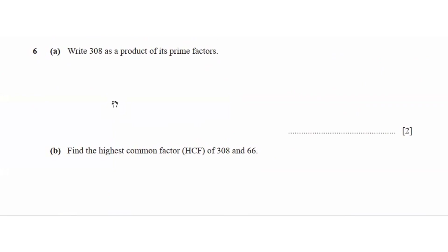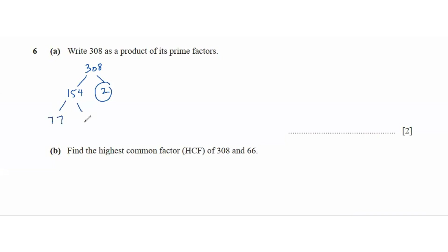Question 6 says write 308 as a product of its prime factors. 308 is divisible by 2 because it's an even number, so 154 times 2. 2 is prime so we can't break it down further. 154 becomes 77 times 2, and 77 is 7 times 11. So our prime factors are 7 times 11 times 2 squared.